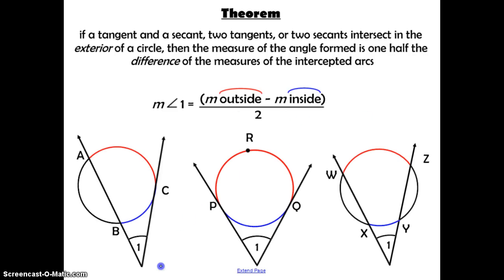This theorem talks about what happens when the two lines intersect outside of the circle. It says if a tangent and a secant, two tangents, or two secants intersect in the exterior of the circle, then the measure of the angle formed is one half the difference of the measures of the intercepted arcs. You have two intercepted arcs — one further away from the angle and one closer to the angle. In all three cases, take the outside arc, subtract the inside arc, divide by two, and you get the angle. Outside minus inside divided by two equals the angle.